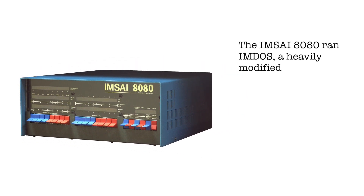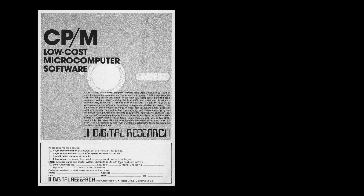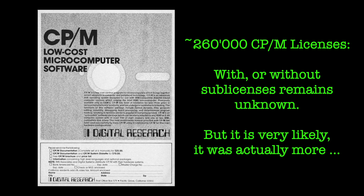The IMSAI 8080 is also a good example, as it didn't actually run vanilla CPM but a modified version called IMDOS, for which DRI sold a fixed-fee non-exclusive use license to IMS Associates for 25,000 US dollars. It's unclear whether the aforementioned 260,000 CPM licenses also account for any such sub-licenses or not. For certain years, however, the microcomputer market was mostly dominated by CPM at that stage.